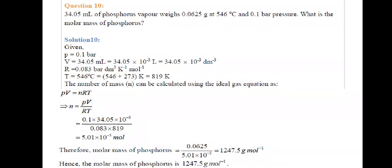Next, 34.05 milliliters of phosphorus weighs 0.0625 grams at 546 degree centigrade and 1 bar pressure. What is the molar mass of phosphorus? Given mass is 0.0625 gram. We know P equals 1 bar, V equals 34.05 ml which is also 34.05 times 10^-3 decimeter cube. R value is 0.083 bar decimeter cube kelvin inverse mole inverse. Temperature 546 degree centigrade is 819 kelvin.